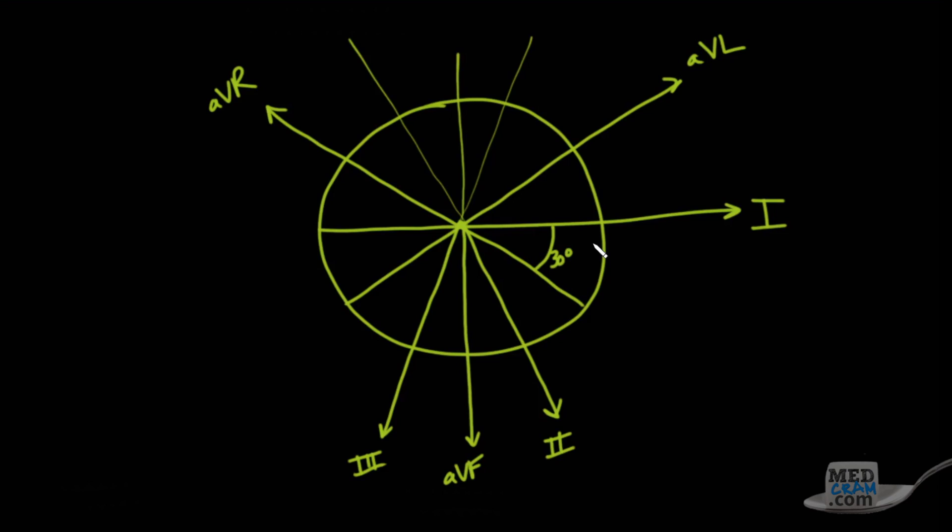The first thing that I like to do in terms of trying to figure out what the axis is, is I always do the 90 degree coordinates, one and AVF. Now they're both positive here and here. The axis is always measured from this, and it's always measured positive this way and negative this way. So if we're positive and positive, we've got to be in this quadrant.